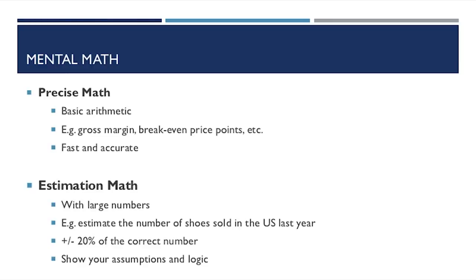For estimation math, you estimate large numbers — for example, 43.5 billion dollars and then calculate 23% of it. Say you want to estimate the number of shoes sold in the US last year. Your goal is to get a result within a 20% margin of error of the precise result — 20% higher or lower. You don't have to be exact, but importantly you must show your assumptions and logic for how you arrived at the result.